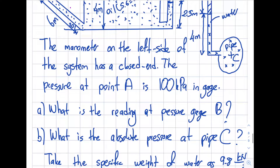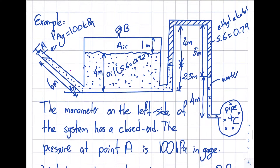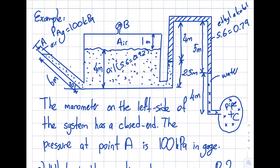The second half of the question asks: what is the absolute pressure at pipe C? The specific weight of water is taken as 9.8 kilonewton per meter cubed. The dotted lines indicate oil with a specific gravity of 0.92, this is ethyl alcohol with specific gravity 0.79, and the areas marked with X are water, which also occupies this pipe.